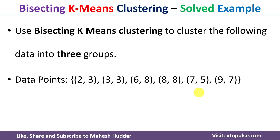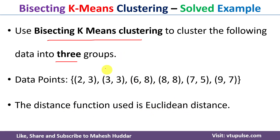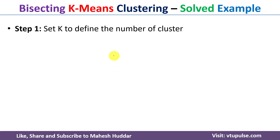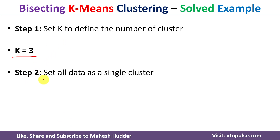In this case we have been given six data points. Using these data points we need to apply the bisecting k-means clustering algorithm and divide them into three groups, or three clusters. We need to use the Euclidean distance to calculate the distance between the centroid and the data points. The first step is to define the value of k, which is already given as part of the problem definition: k is equal to three.